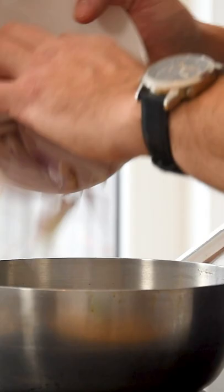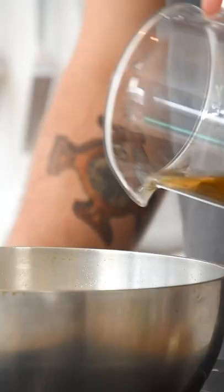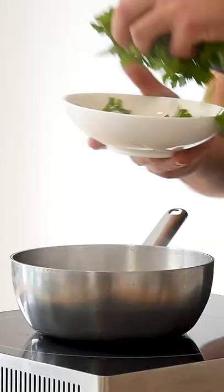Now sauté the shallots with salt. Then add the broth with the picked parsley and bring it to a boil.